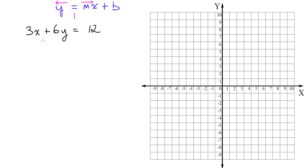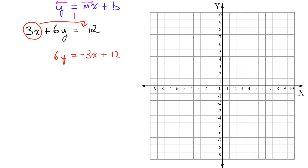There's another way to move 3x to the correct spot: you can just drag it over and put it where it belongs. When working with equations, whenever you take something from one side across the equal sign to the other side, you have to change the sign. So if I take this 3x from the left side and drag it across the equal sign to the right side, it goes from being positive 3x to negative 3x — which is the same result we got when we subtracted 3x on both sides. So: 6y equals negative 3x plus 12.